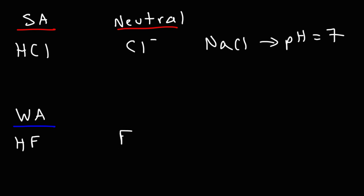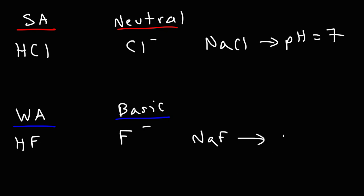To contrast that, fluoride is not a neutral ion. Because HF is a weak acid, fluoride is a significant base — it's considered a basic ion. If you were to put sodium fluoride in water, the pH will not remain 7; it can go somewhere between 8 and 10, indicating basic conditions. So the chloride ion is neutral, but the fluoride ion is a weak base. The conjugate of a strong acid is a neutral ion, and the conjugate of a weak acid is a weak base.